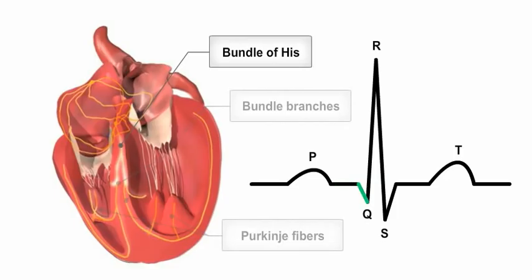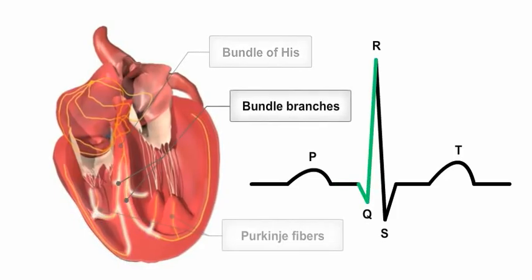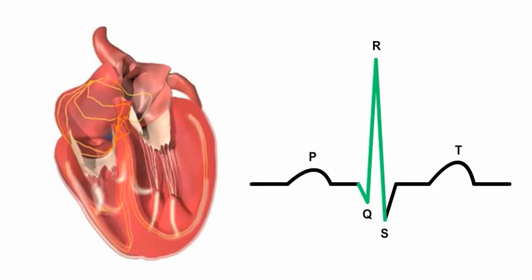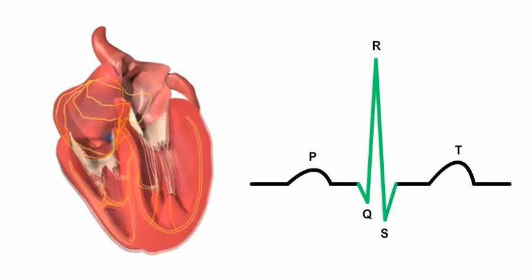It enters the bundle of His and spreads through the bundle branches and the large diameter Purkinje fibers along the ventricle walls.